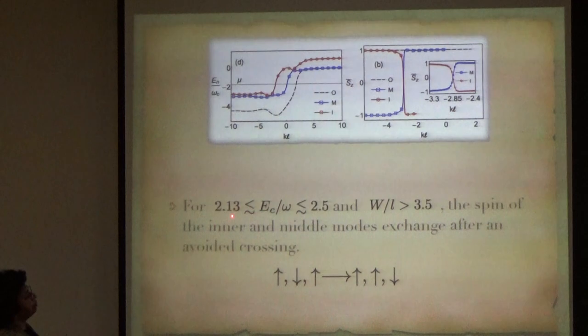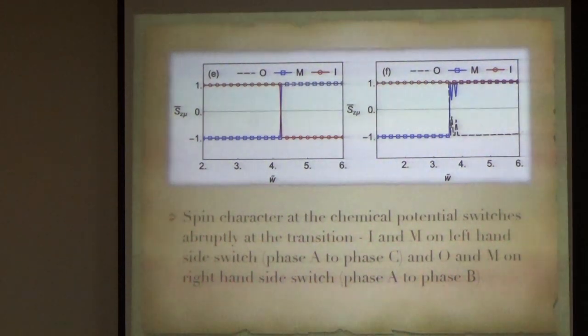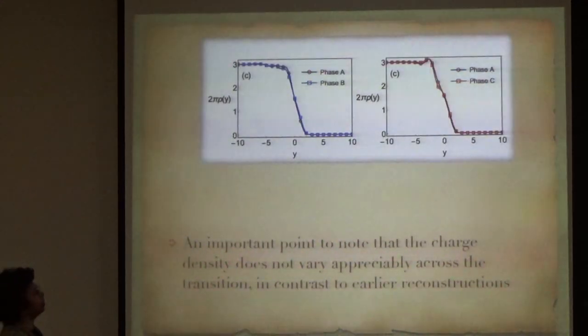Similarly, in the other region from 2.13 to 2.5, and again by when you make the width large enough, the spin of the inner and middle modes change, the outer one remains the same. So, the red and blue here have switched. If you look at the spin character, exactly at the chemical potential, it changes abruptly at the transition. Here, the inner and middle modes, and here are the outer and middle modes. So, phase A to phase C or phase A to phase B. So, these are the phases that we are talking about.